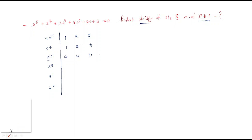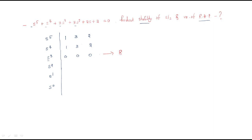When a row's coefficients are all zero, it is called a Row of Zeros (ROZ). In this case, the s^3 row has all three coefficients equal to zero. The row above the ROZ has non-zero values. Whenever a row consisting of all zero coefficients occurs in the RH table, that is called a Row of Zeros.